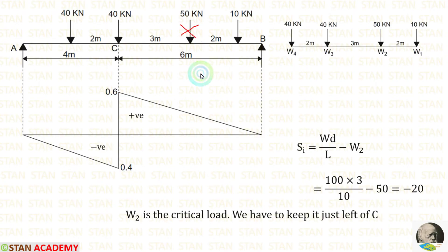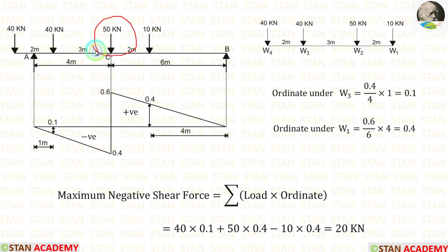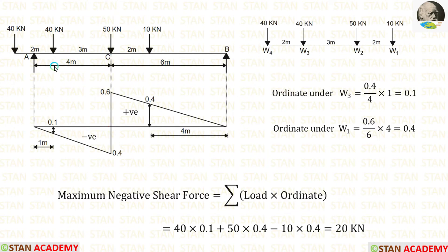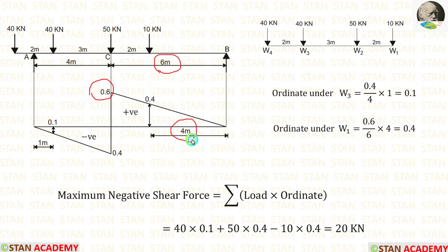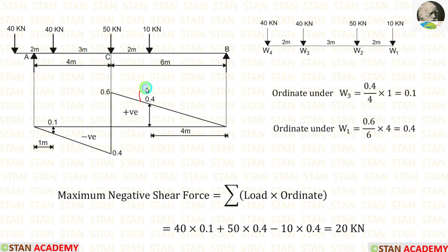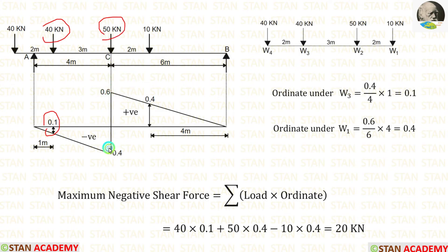So we should not keep 50 kN to the right of C; we should keep it at point C, just to the left of C, because on the left side only we have the negative shear force ordinate. Now let us calculate the other ordinates. For 4 meter it is 0.6 but for 1 meter I get 0.1, and for 6 meter it is 0.6 but for 4 meter I get 0.4. The maximum negative shear force is: 40 into 0.1 plus 50 into 0.4 minus 10 into 0.4, giving us 20 kN.